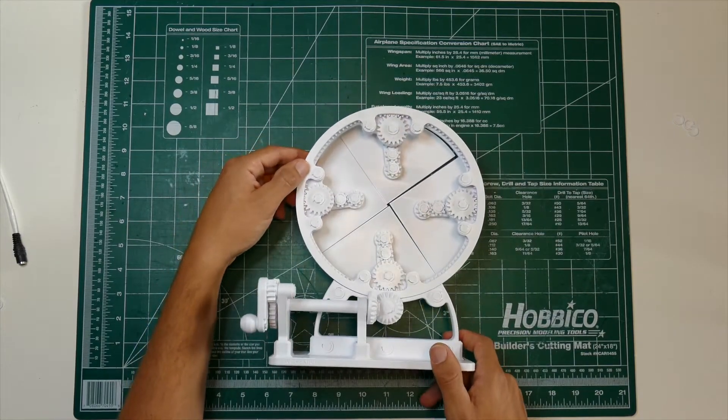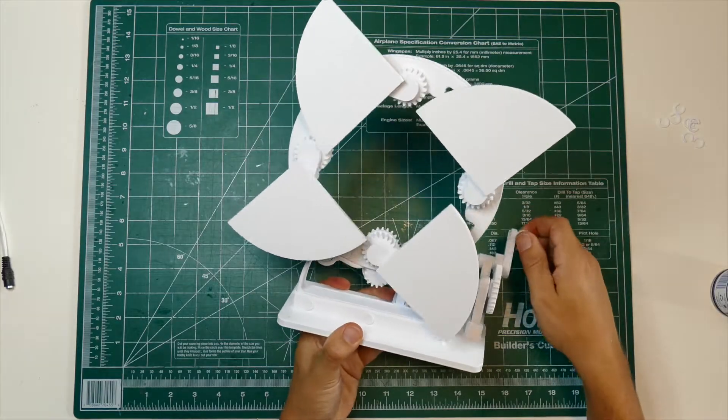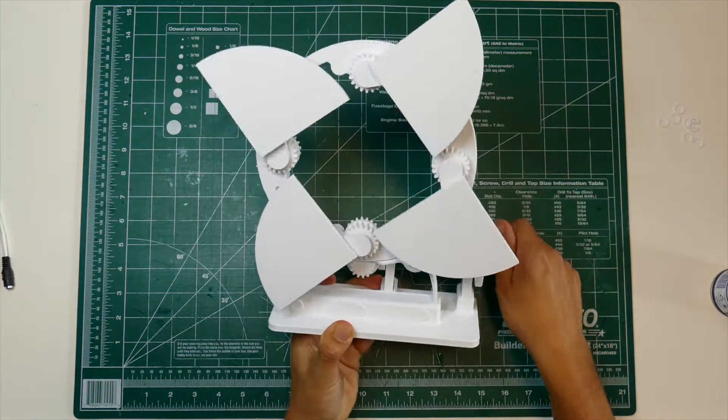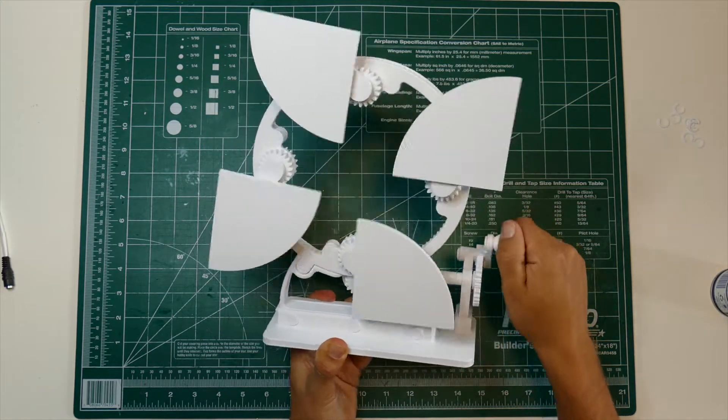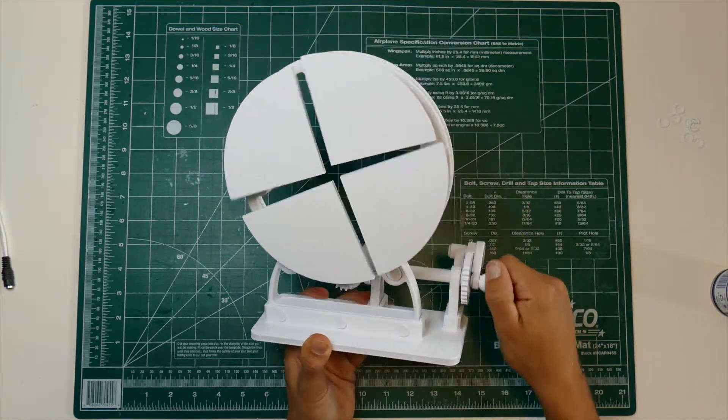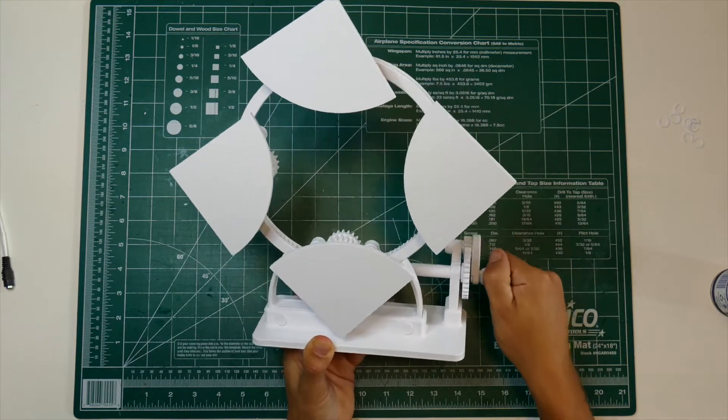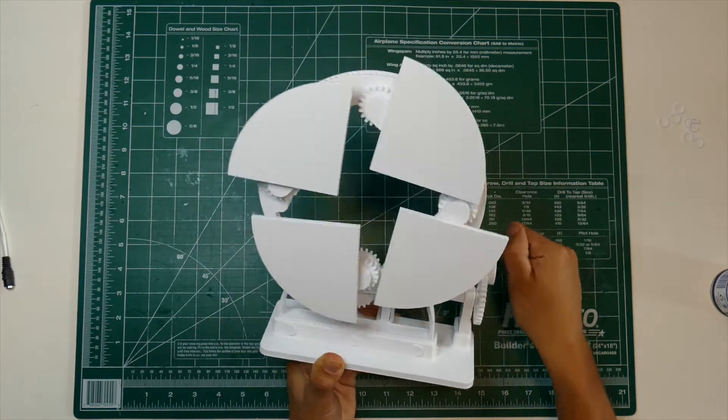And boom, just like that you have yourself, your very own exploding circle sculpture. Now it's going to take some more spins and a little bit more WD-40 to make sure everything is working together, but stay with it and you'll have a great working sculpture.